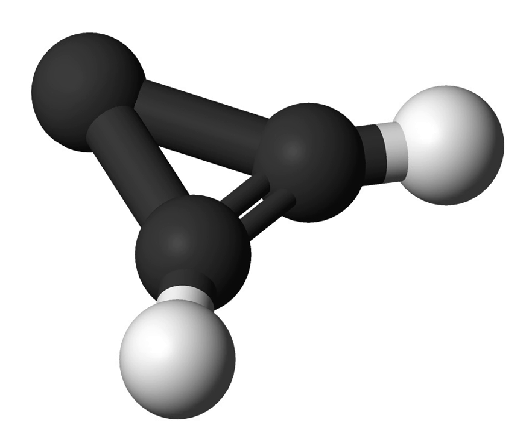Formation. The major formation reaction of CC3H2 is the dissociative recombination of CC3H3+. CC3H3+ is a product of a long chain of carbon chemistry that occurs in the ISM.